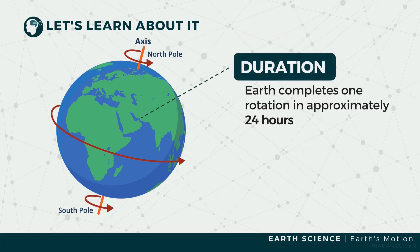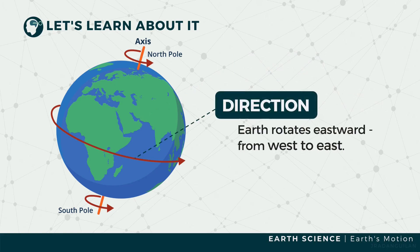Earth completes one rotation in 23 hours and 56 minutes, or approximately 24 hours. This is what we call a day. You often notice that the Sun rises in the east and sets in the west, and the stars in the night sky share the same motion as well. This is attributed to Earth's direction of rotation — Earth rotates eastward, or from west to east. This rotational motion is known as prograde.